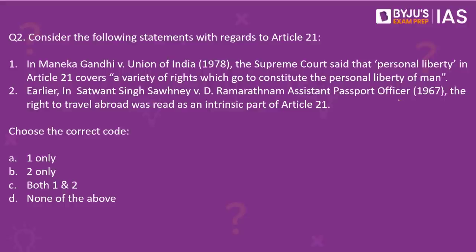Question number two. Consider the following statements with regards to Article 21. Number one: in the Maneka Gandhi versus Union of India 1978 case, the Supreme Court said that personal liberty in Article 21 covers a variety of rights which go to constitute the personal liberty of man. Second: earlier, in Satwant Singh Sawhney versus D. Ramarathnam, Assistant Passport Officer 1967 case, the right to travel abroad was read as an intrinsic part of Article 21. Which of these statements is or are correct? The correct answer is C.